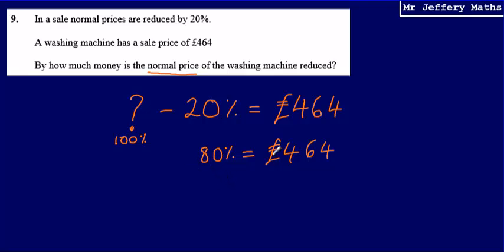So I now know that 80% equals £464 and I want to figure out what was the normal price, what was the 100%? In order to work that out, what I'm going to do is I'm going to figure out what 1% was first. So if I know that 80% was £464, to work out what 1% is from 80%, I'm going to have to divide by 80. So £464 divided by 80, that will give me what 1% is going to be.